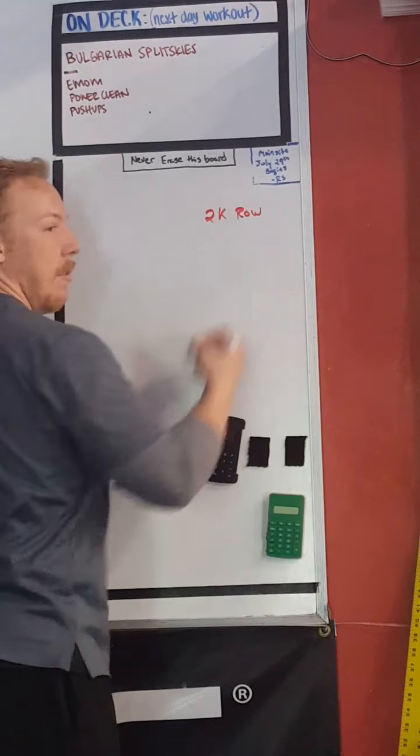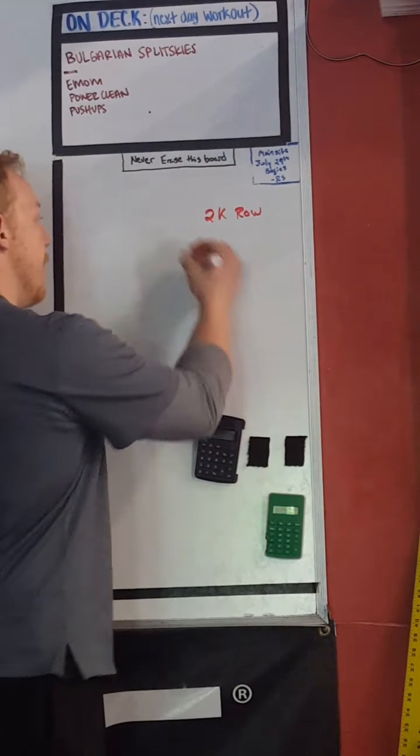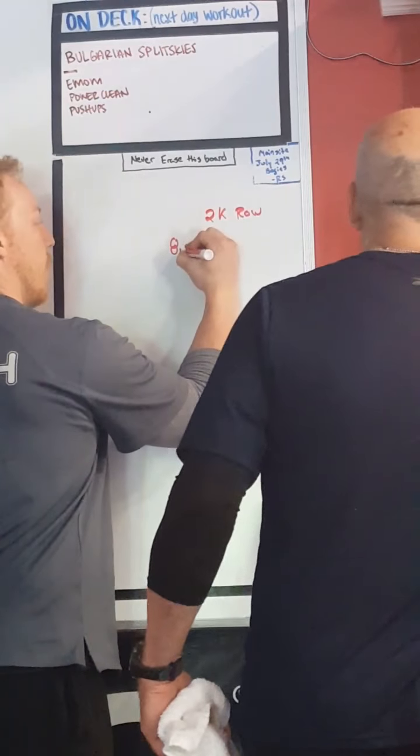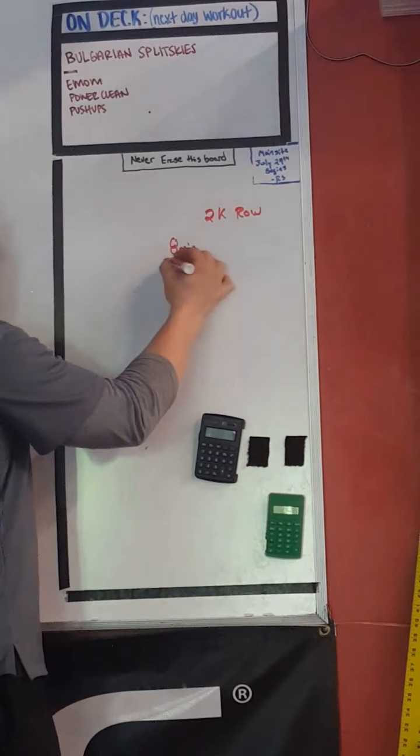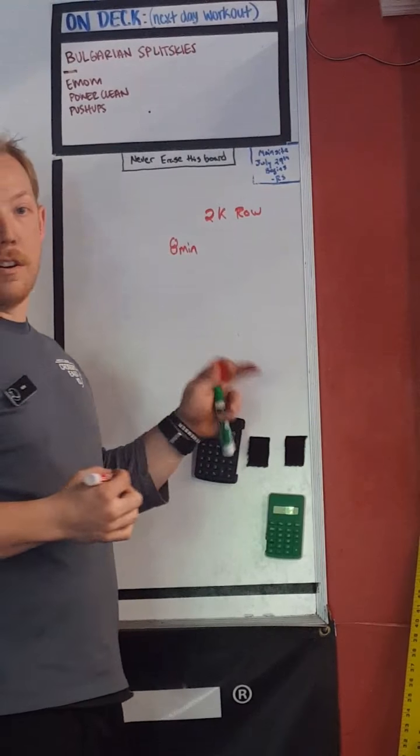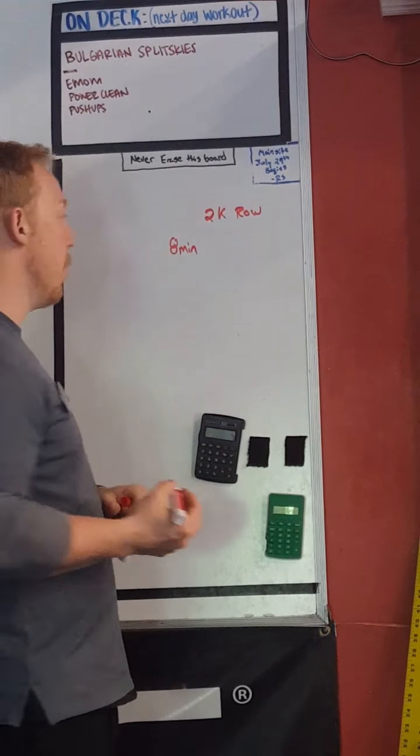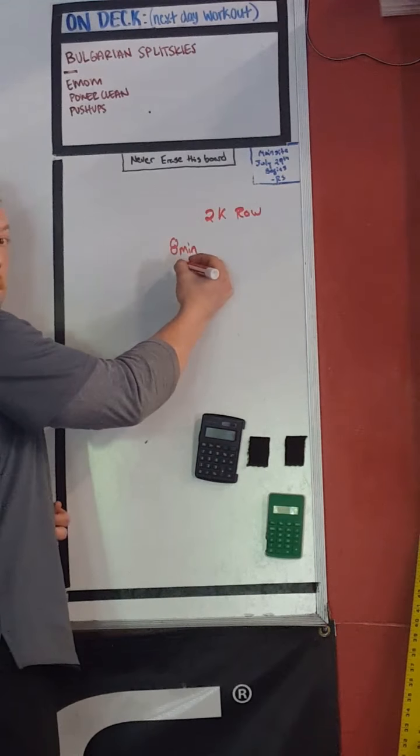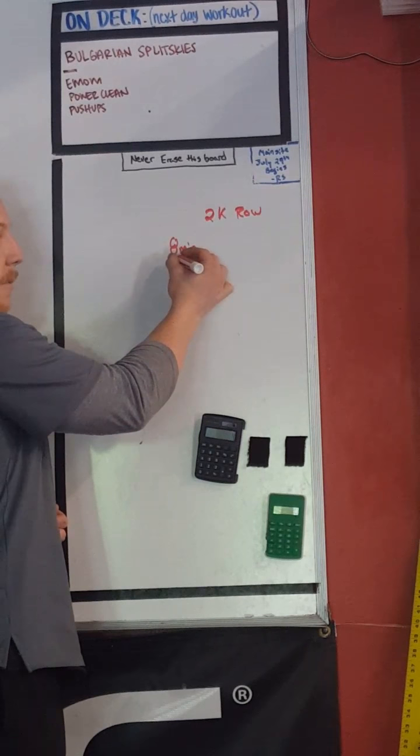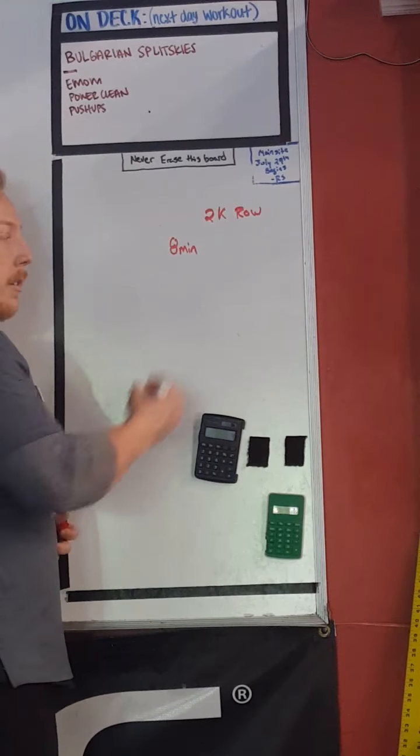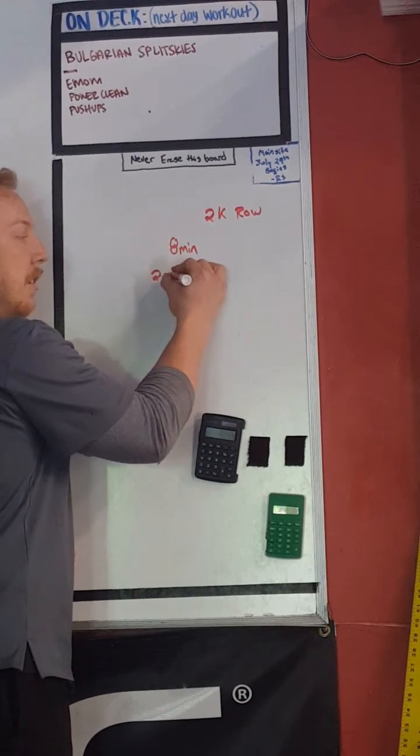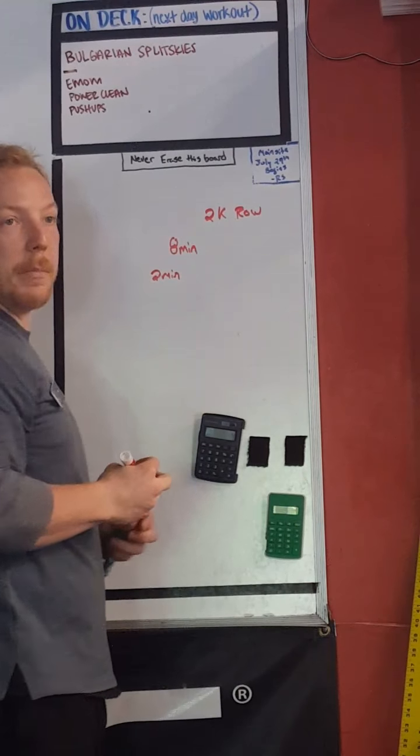Let's say your 2K row is eight minutes. That means each 500 meter section in that will be what? If we have a 2K row of eight minutes, four into eight makes two minutes for each 500 meter row.